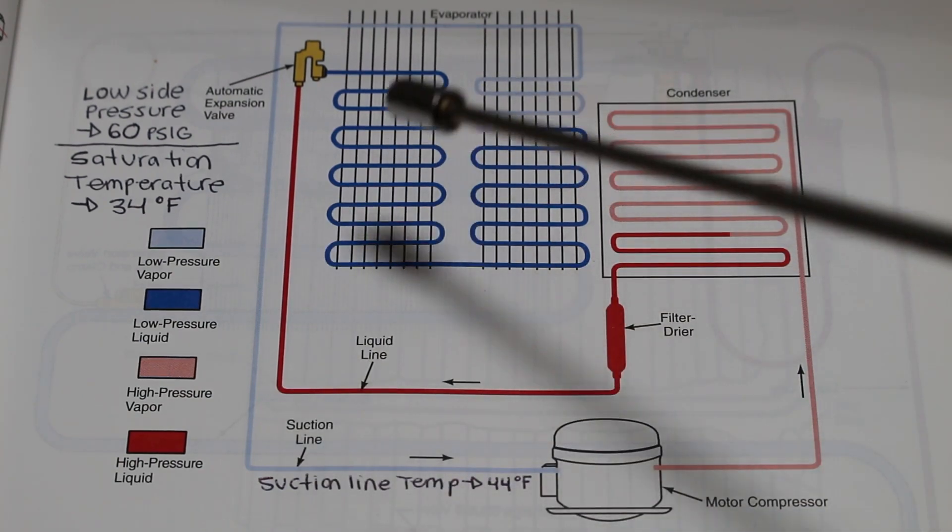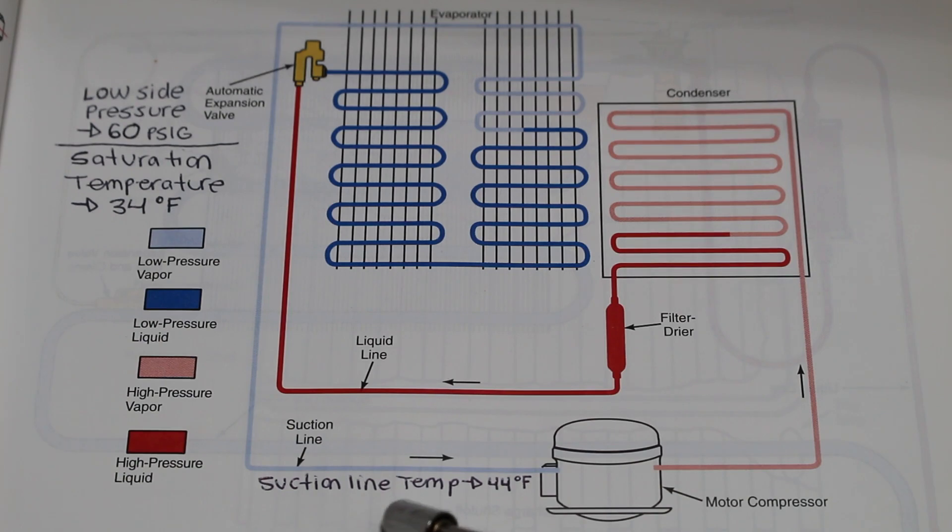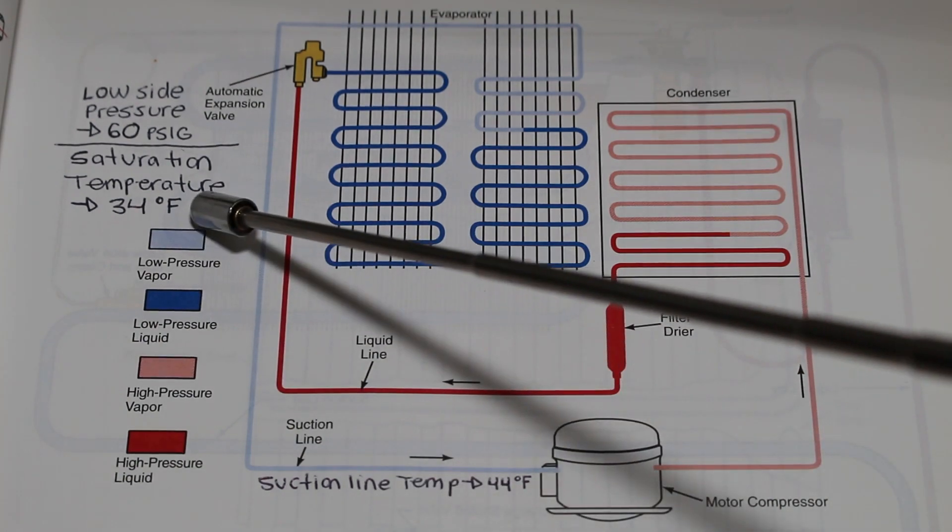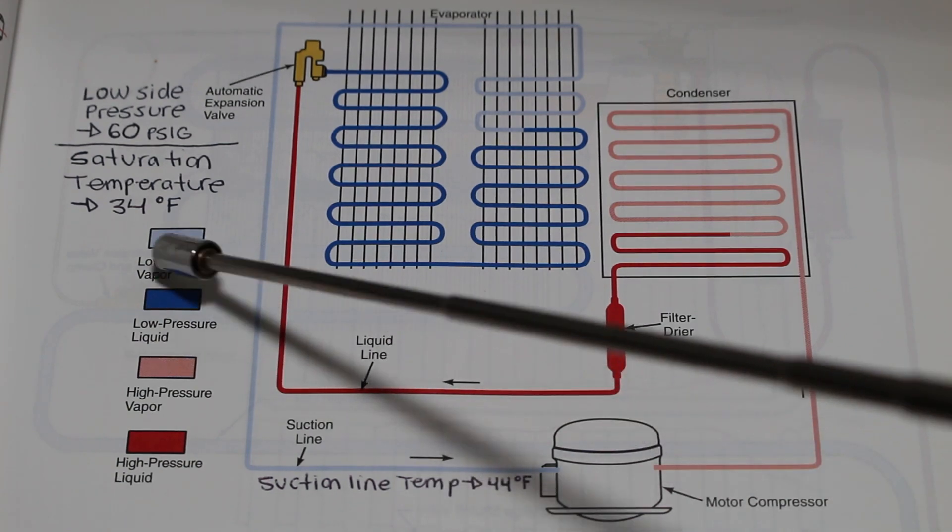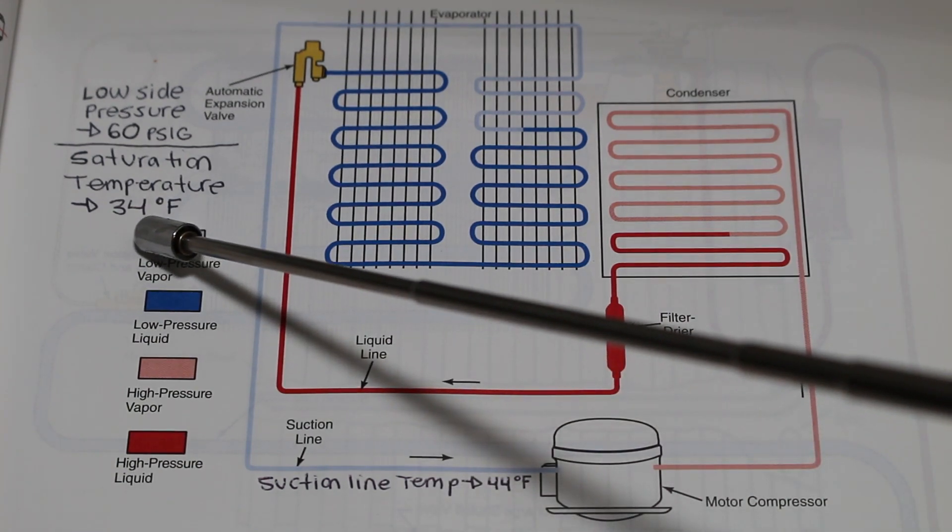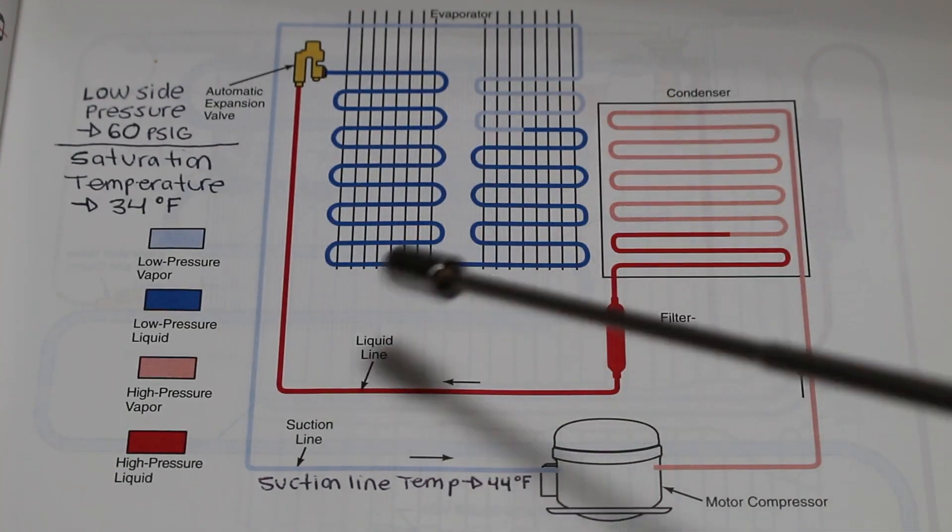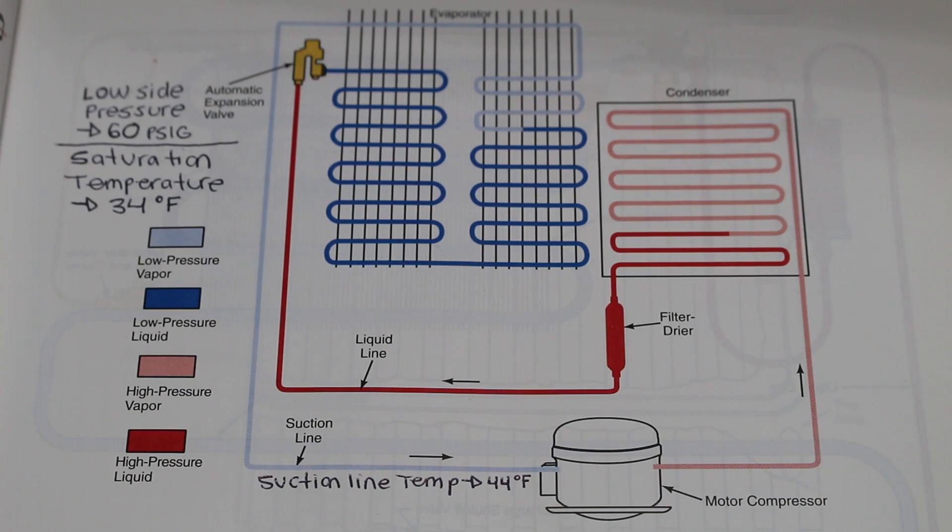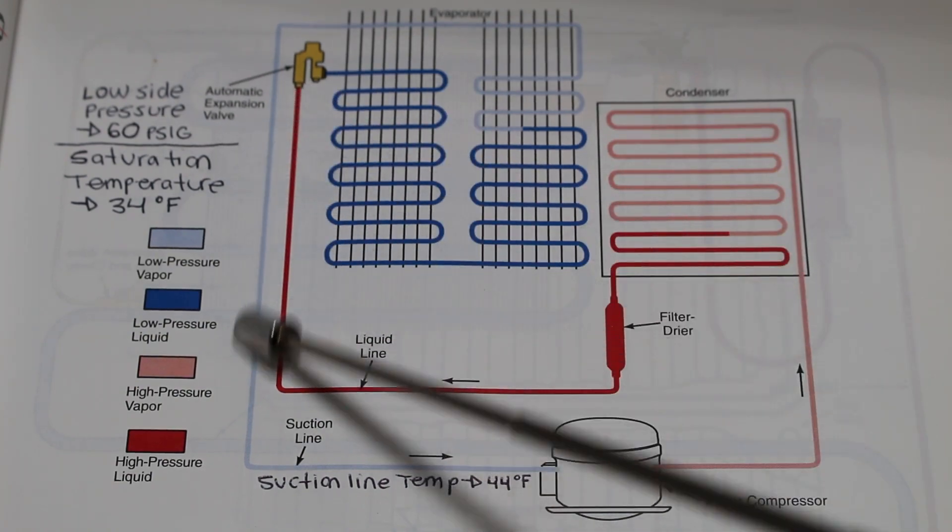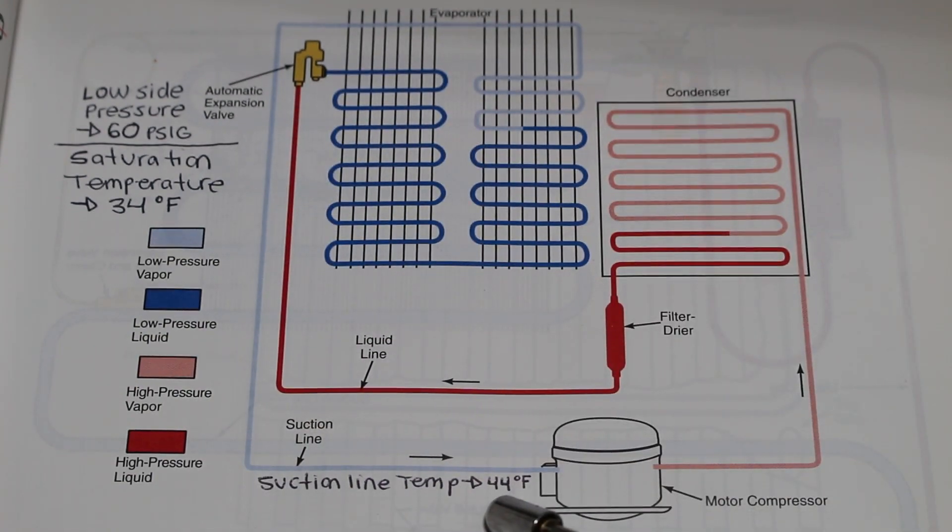If our superheat is the difference between our suction line temperature and our saturation temperature, 44 degrees Fahrenheit minus 34 degrees Fahrenheit is 10 degrees Fahrenheit. So for this example, we have a 10 degrees superheat. As refrigerant leaves our evaporator and travels down to the compressor, there is a temperature increase, and that temperature increase is known as superheat.